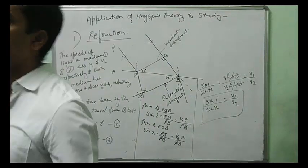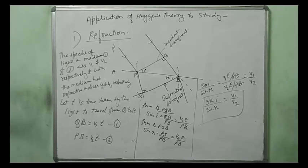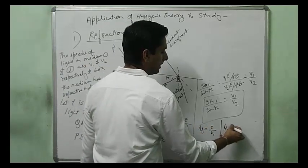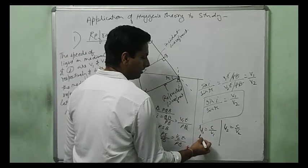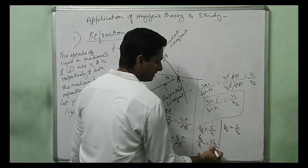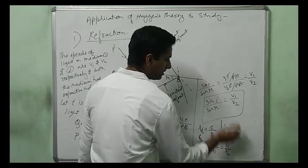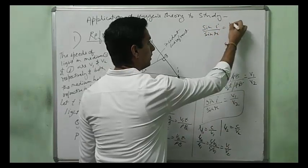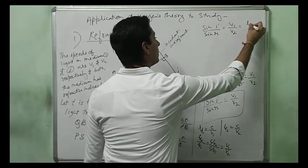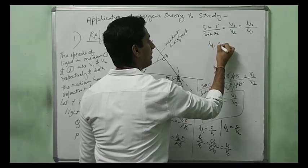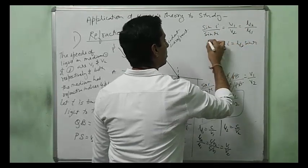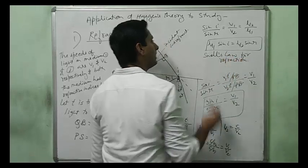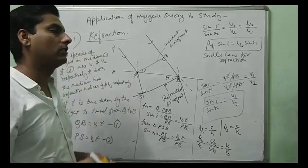We know that mu1 equals C by V1 and mu2 equals C by V2. So mu2 divided by mu1 equals V1 by V2. Therefore, sine I by sine R equals V1 by V2 equals mu2 by mu1. Cross multiplying gives mu1 times sine I equals mu2 times sine R, which is Snell's law of refraction. This proves refraction using Huygens' wave theory.